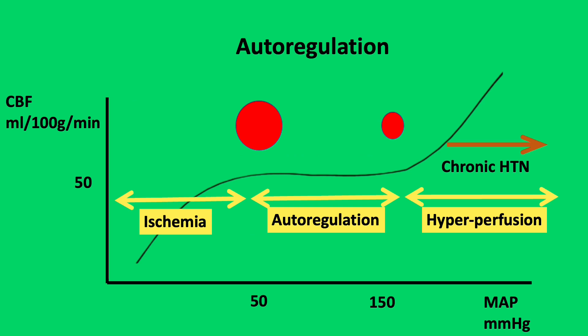Autoregulation: cerebral blood flow remains constant over a range of pressures from 50 to 150 mmHg, due to changing vessel wall diameter. As pressure decreases, the calibre of the vessel increases. Above 150 mmHg there is a risk of hyperperfusion, and below 50 mmHg there is a risk of ischaemia to the brain tissue. For chronic hypertension, the autoregulation curve is shifted to the right.